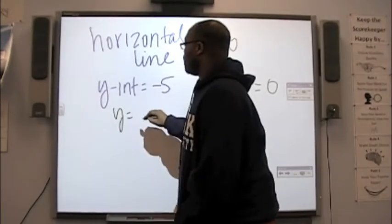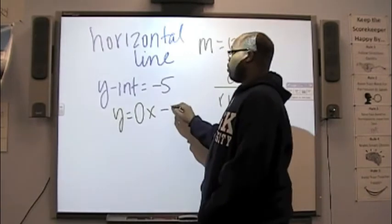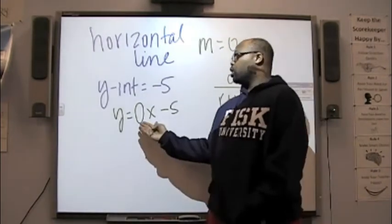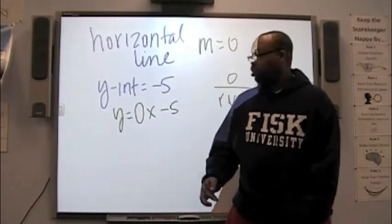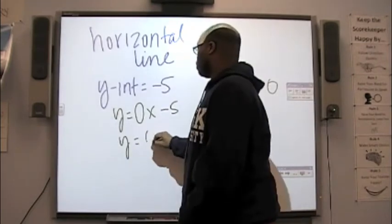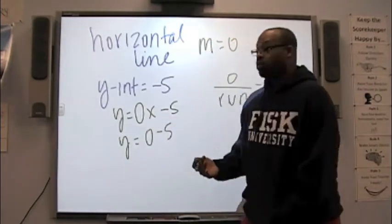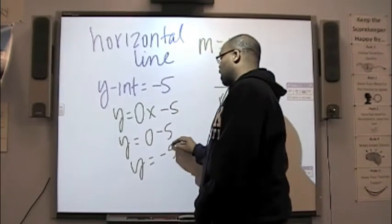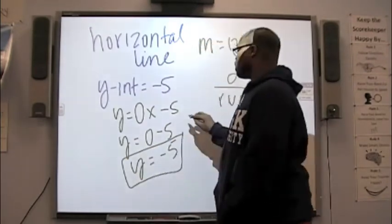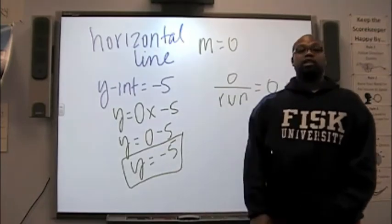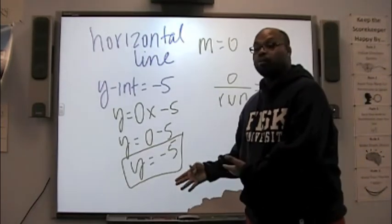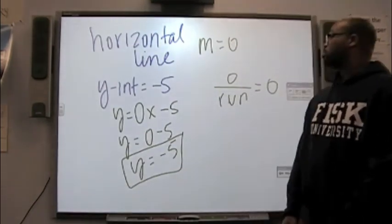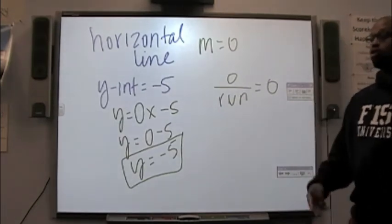If we know that the horizontal line slope is 0, we can rewrite this out as y equals 0x minus 5. Now, anything times 0 is 0, so that's y equals 0 minus 5, and 0 minus 5 is a negative 5. So, really, this is y equals a negative 5. So, your graph of a horizontal line will look like this. It will be y equals a number, an actual value, y equals a numeral.